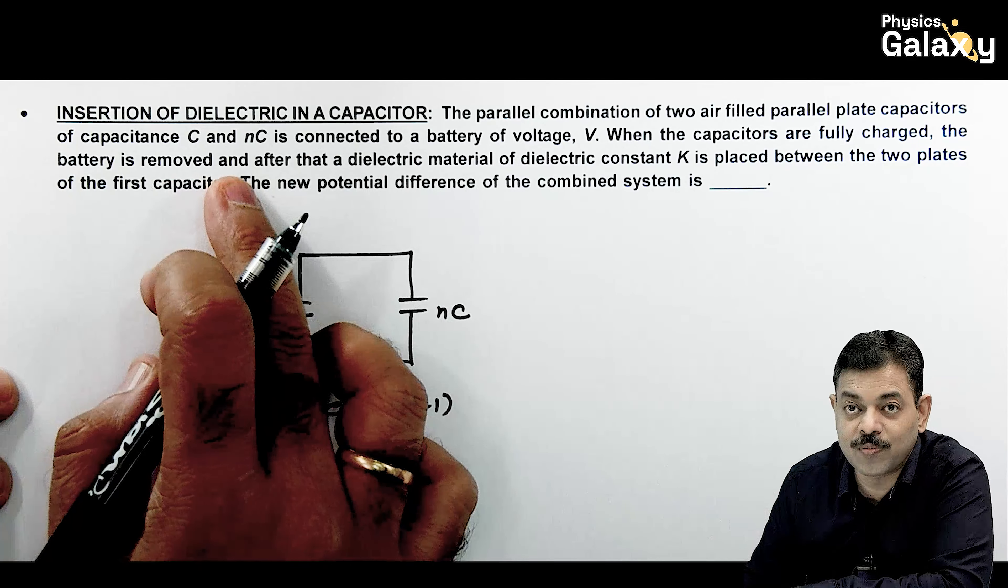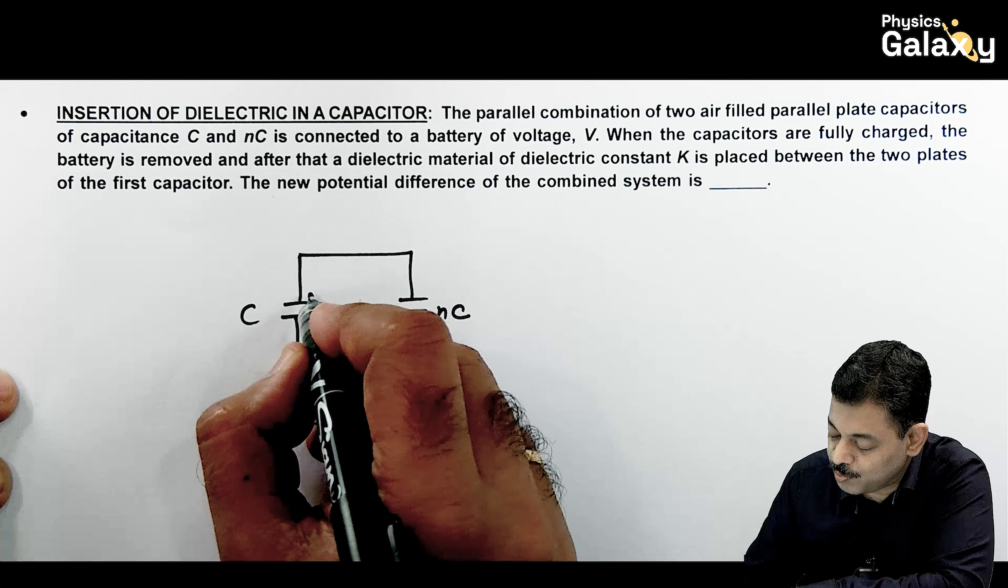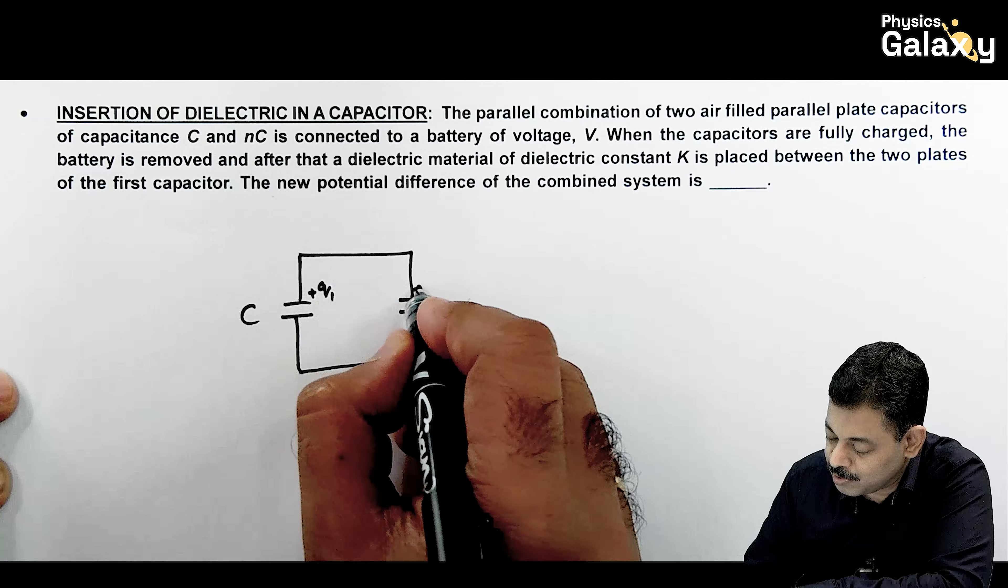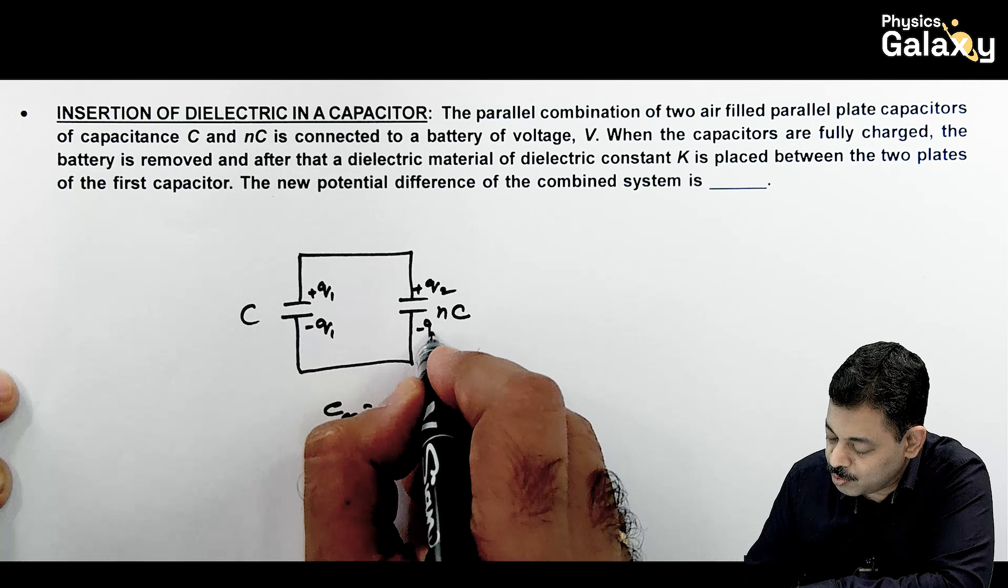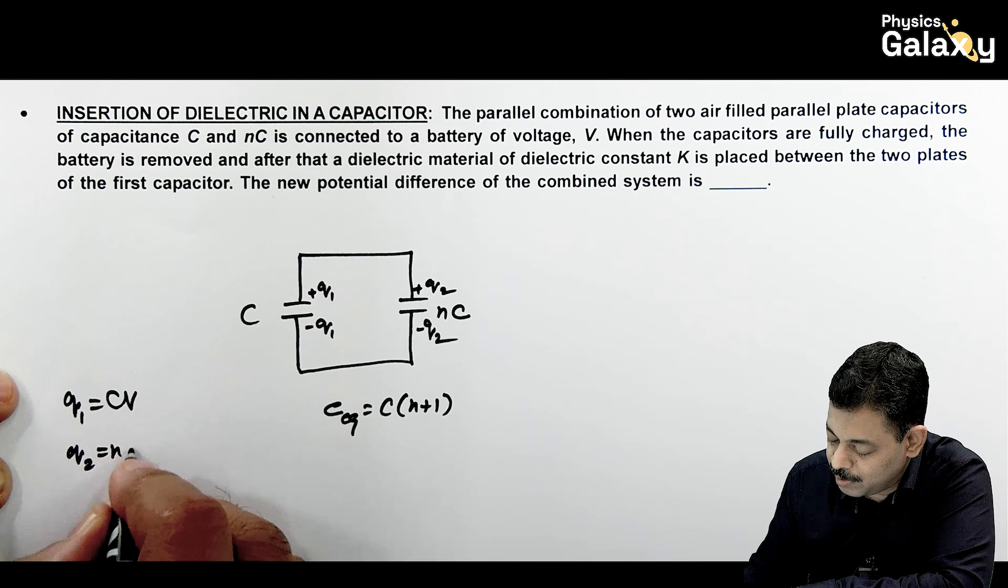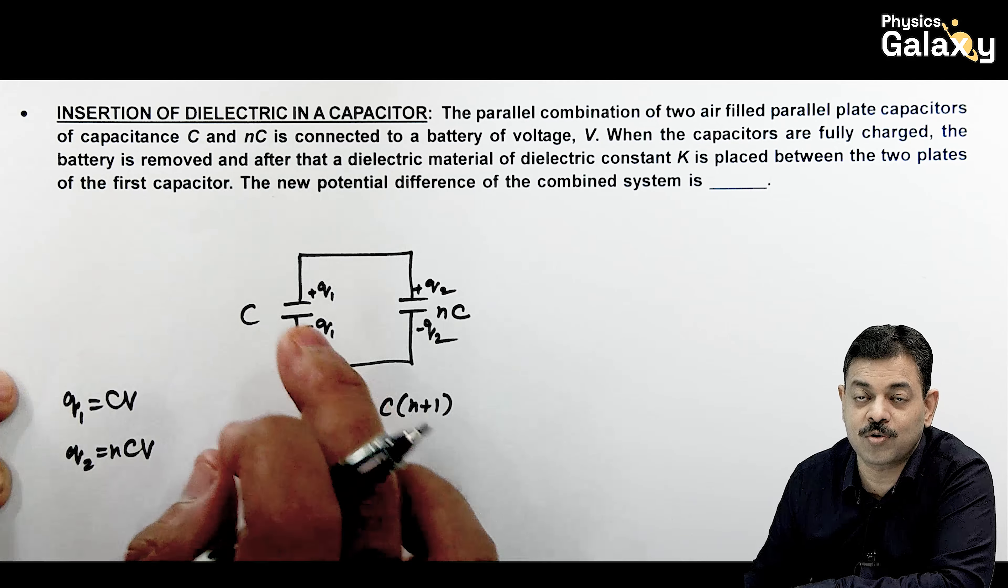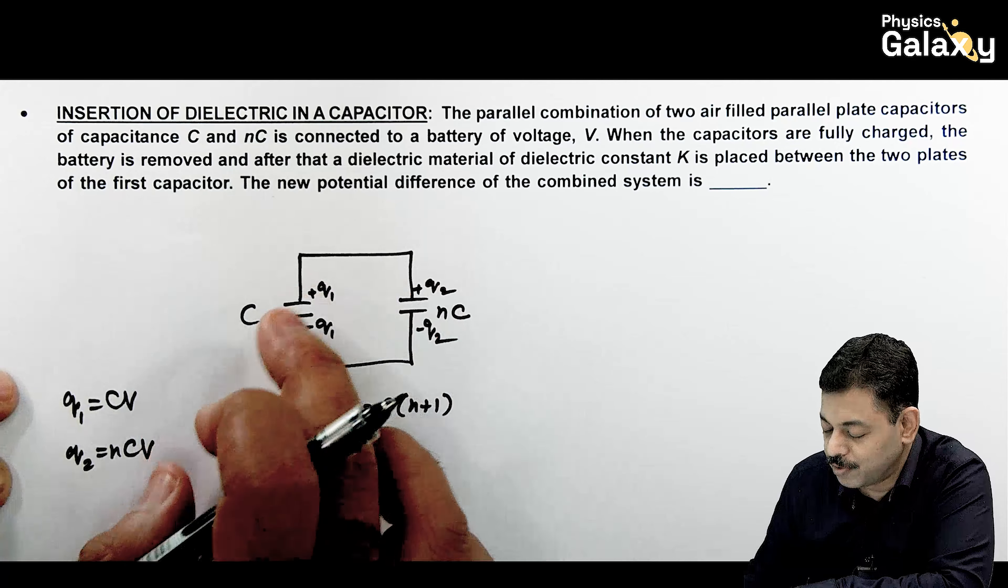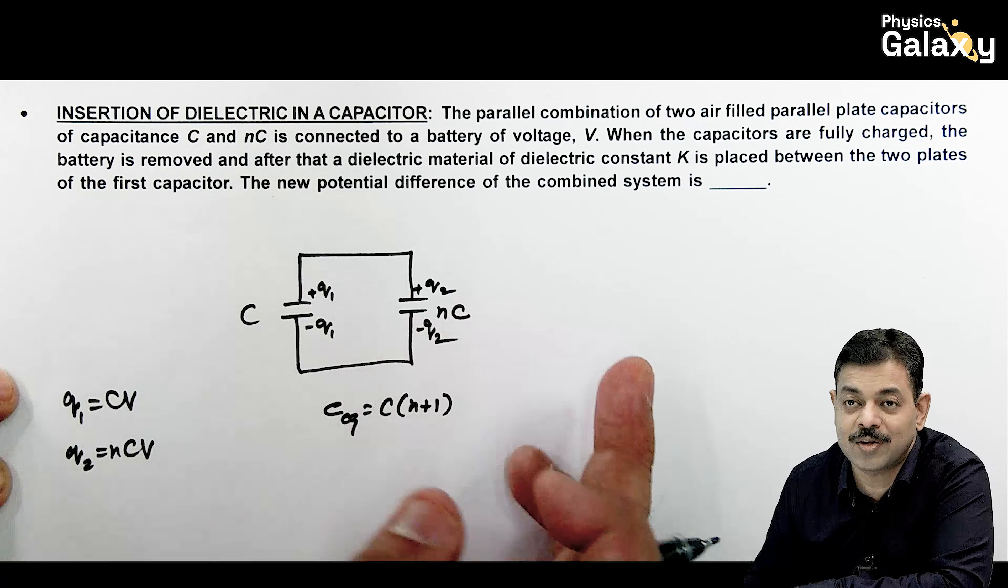The battery is removed. If we charge the battery, the battery is removed, then the charges are +Q1, +Q2 and -Q1, -Q2, where Q1 is CV and Q2 is NCV. Because it's across the battery, there will be potential difference between both of them. So Q1 is CV and Q2 is NCV.